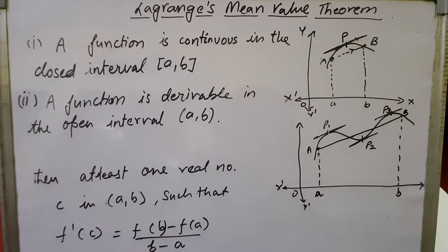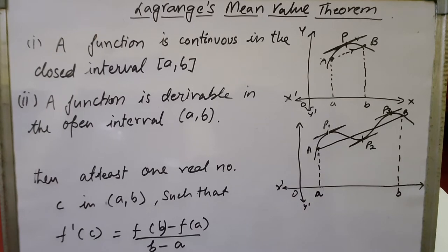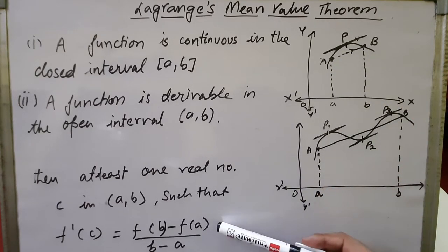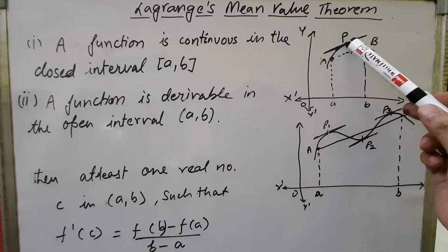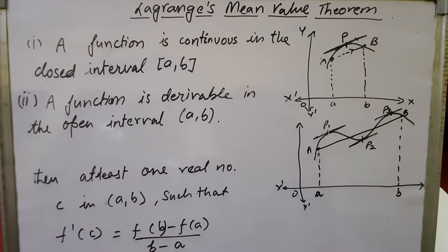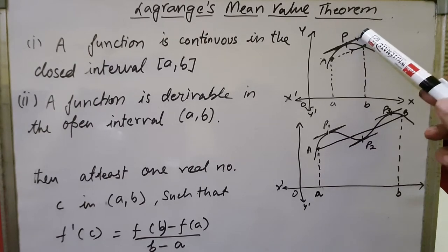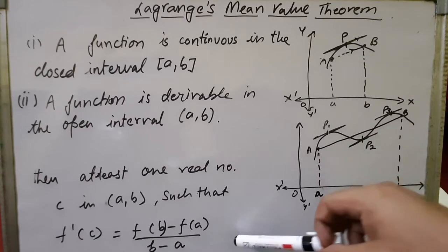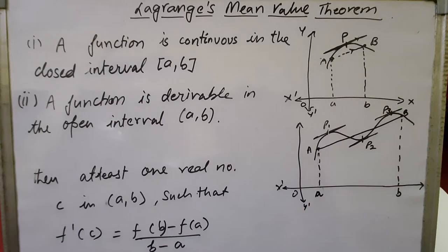These are the only two conditions to determine that the Lagrange Mean Value Theorem is applicable. When both conditions are true — the function is continuous in the closed interval and derivable in the open interval — then LMVT is applicable. At the point c, the slope of the tangent f'(c) equals the slope of the chord: f'(c) = [f(b) - f(a)] / (b - a), which is simply (y₂ - y₁)/(x₂ - x₁).